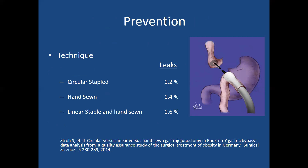As surgeons, we've thought a lot about how to prevent leaks, and naturally we turned to technique. There are several different techniques commonly used. Those include the circular stapled gastrojejunostomy, the hand-sewn anastomosis, and a linear stapled then hand-sewn closure of the enterotomy.